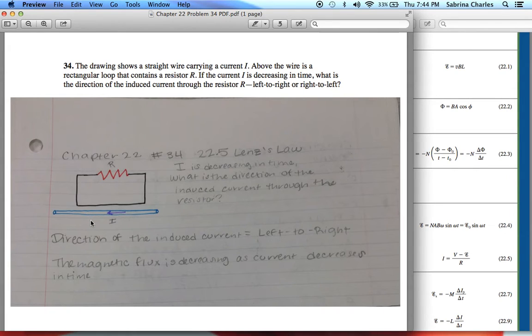According to Lenz's Law, the induced EMF has a polarity that leads to an induced current whose direction is such that the induced magnetic field opposes this flux change. The induced magnetic field will oppose the decrease in flux by pointing into the page in the same direction as the field produced by I.